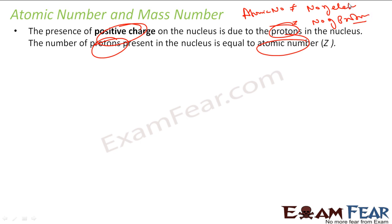Because if the atom is charged — positive or negative — the electron count changes, but this won't happen to the proton count. So please make sure that atomic number is always number of protons. Don't say atomic number equals number of electrons. That is true only for neutral atoms, but for a charged atom it is not true. Always say atomic number is equal to number of protons.